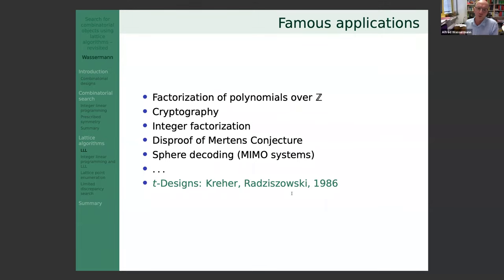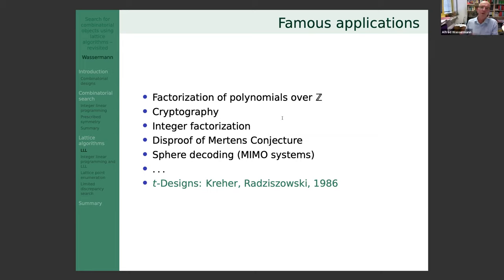After its publication — and even before — people started applying LLL. In the original paper it was used to factor polynomials over the integers. LLL is used in cryptography, integer factorization, number theory (for example the disproof of Mertens' conjecture related to the Riemann hypothesis), sphere decoding for multiple-antenna systems, and countless other applications. And in combinatorics it was first used to construct new t-designs by Kreher and Radiszowski already in 1986.